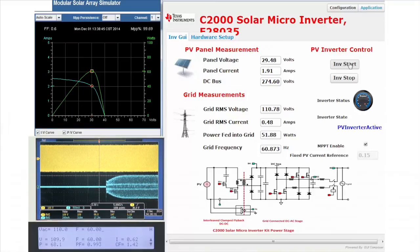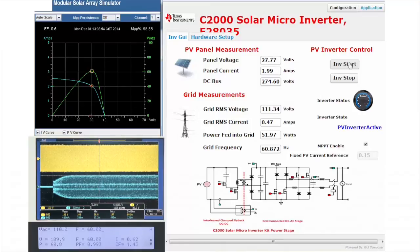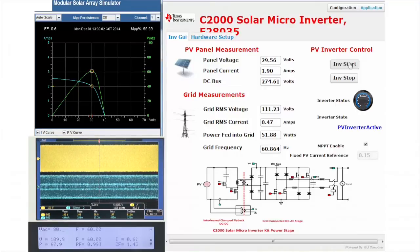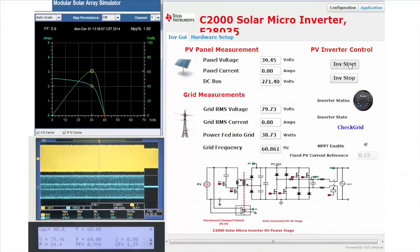Now, it will track back to the maximum power point. To test behavior in case of a grid voltage sag, the AC voltage is changed to 80 volts. The inverter immediately shuts off.